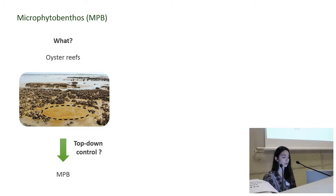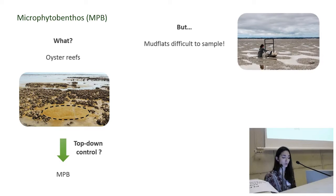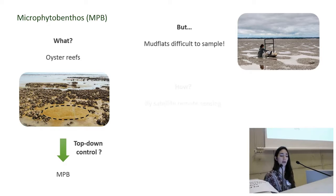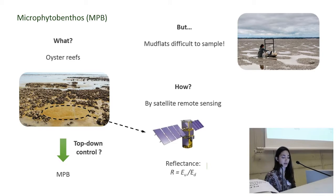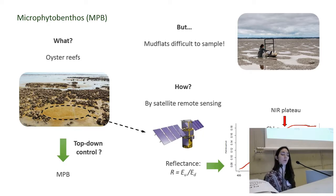An issue was that MPB is highly variable at different scales, and mudflats can also be quite difficult to access. However, despite the microscopic size, MPB biofilms are actually visible by satellite remote sensing, thanks to their pigment content. In our work, we used the optical characteristics of the chlorophyll A absorption and the near-infrared plateau to define the NDVI, a vegetation index commonly used as a proxy of MPB biofilms.